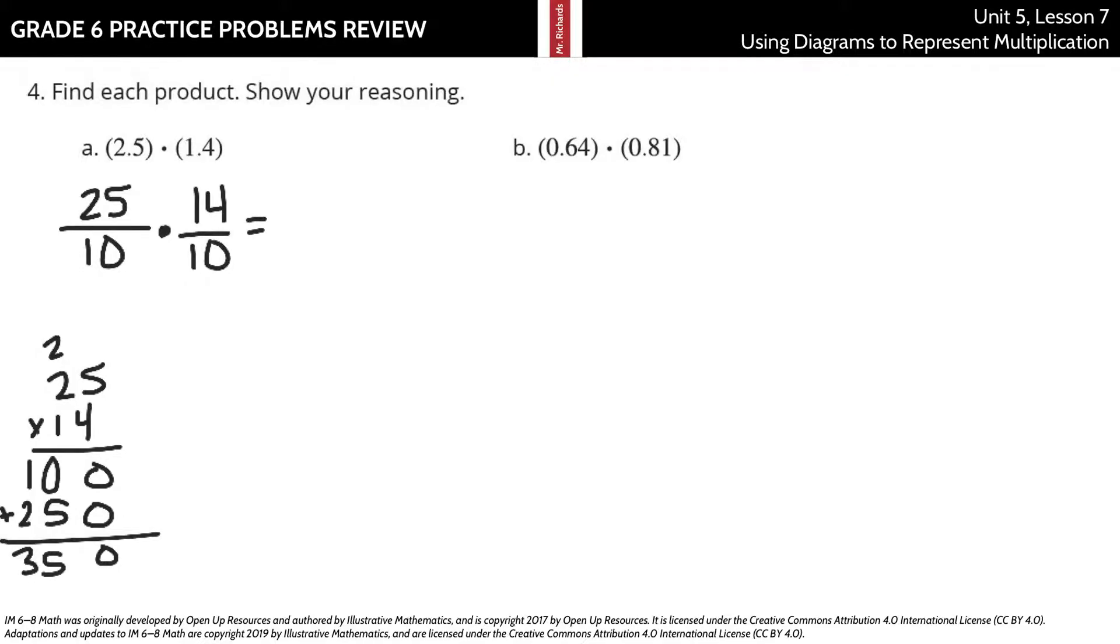So 25 times 14 is 350, over 10 times 10 is 100. So we have 350 hundredths, which is the same thing as 3.5 or 3 and a half.